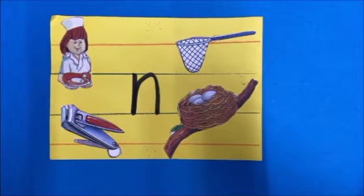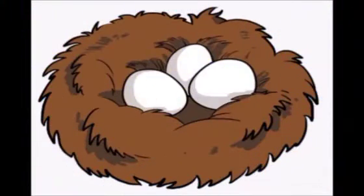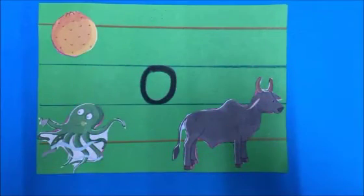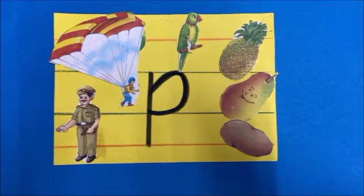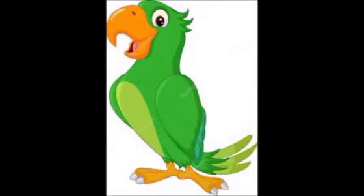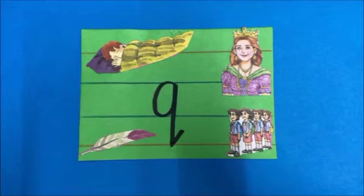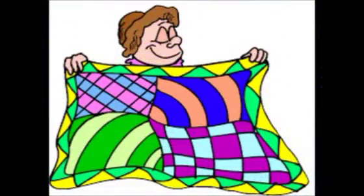N says N as in Nest. O says O as in Octopus. P says P as in Parrot. Q says Qua as in Quilt.